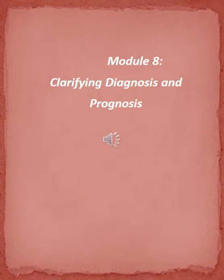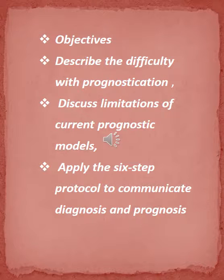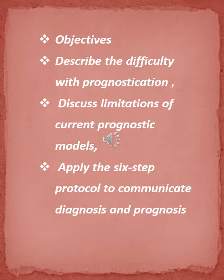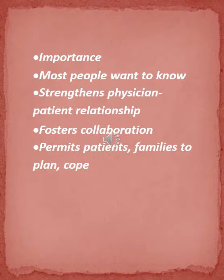Module 8: Clarifying Diagnosis and Prognosis. Objectives: Describe the difficulty with prognostication. Discuss limitations of current prognostic models. Apply the six-step protocol to communicate diagnosis and prognosis.